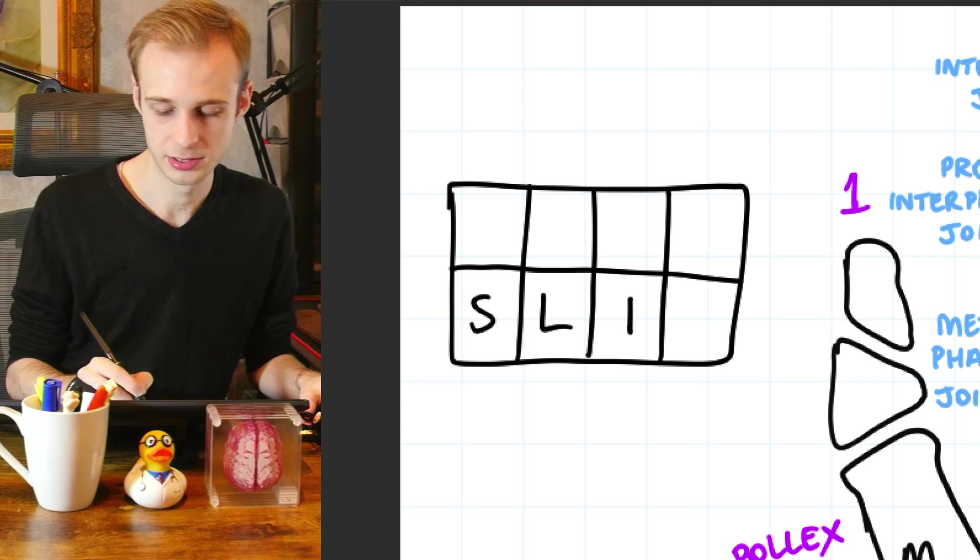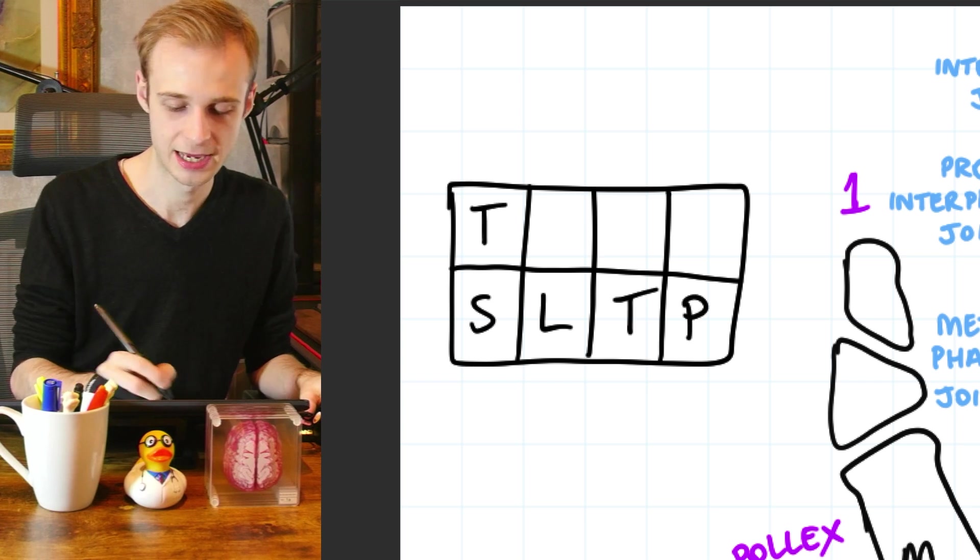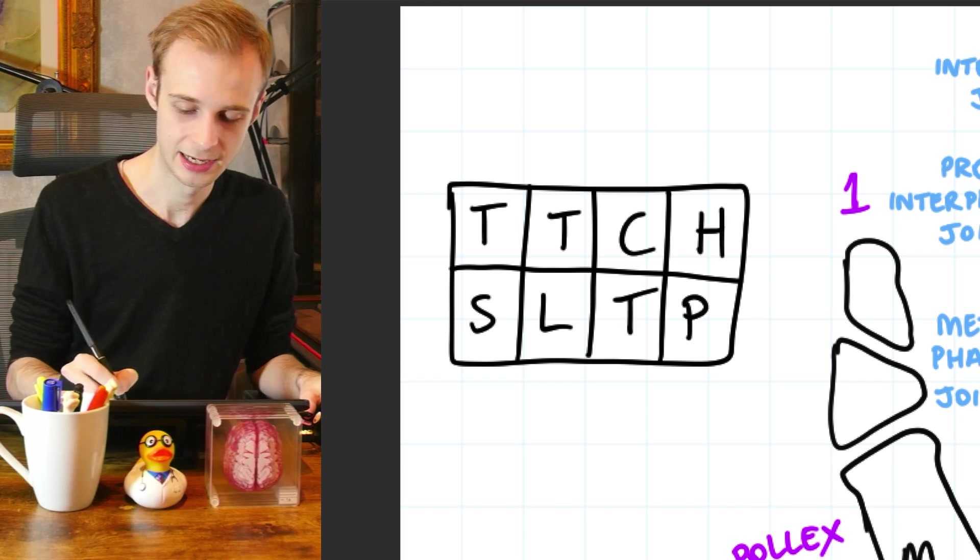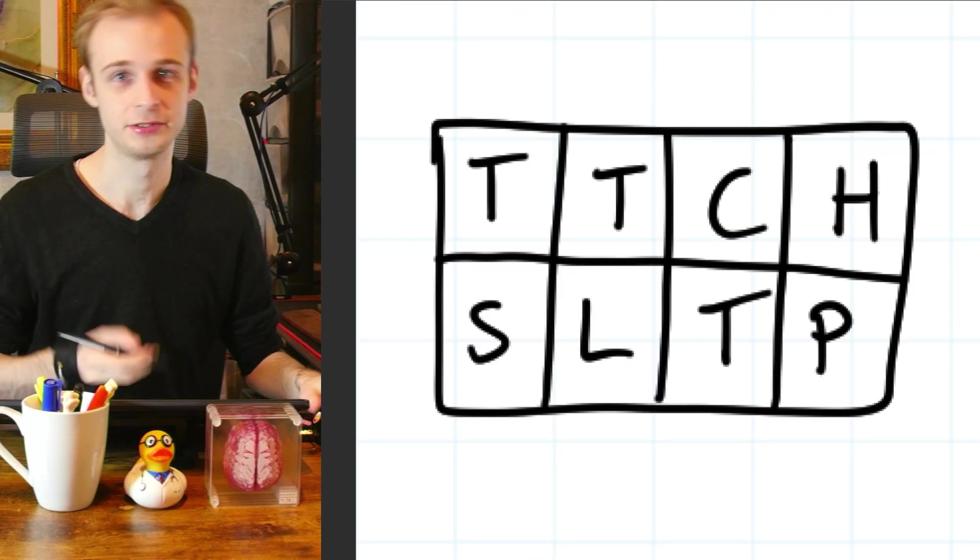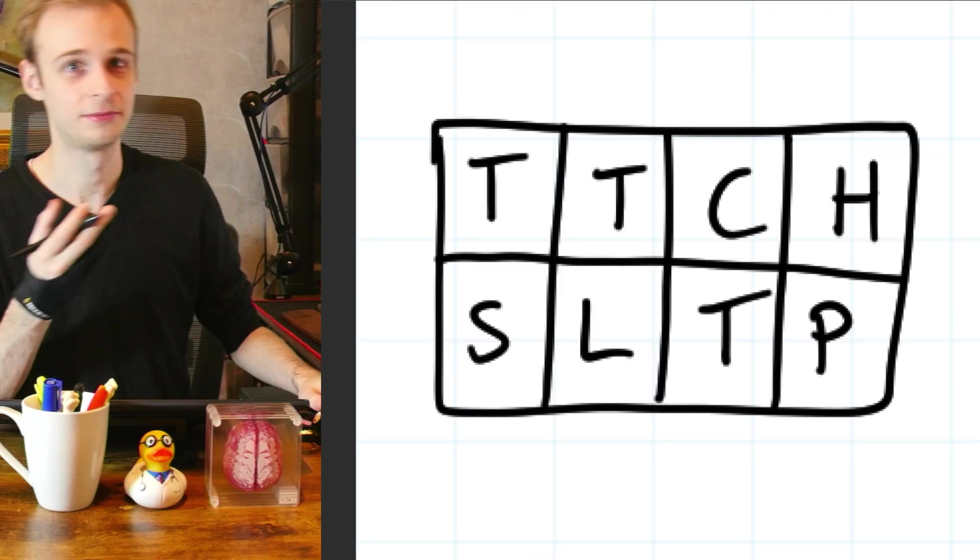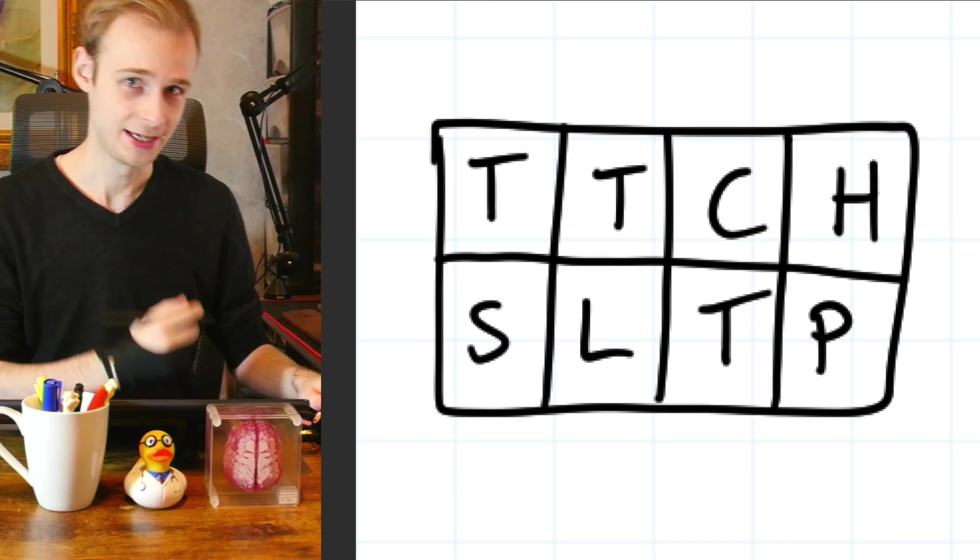is some lovers try positions that they can't handle. So that's scaphoid, lunate, triquetrum, pisiform, trapezium, trapezoid, capitate, and the hamate.